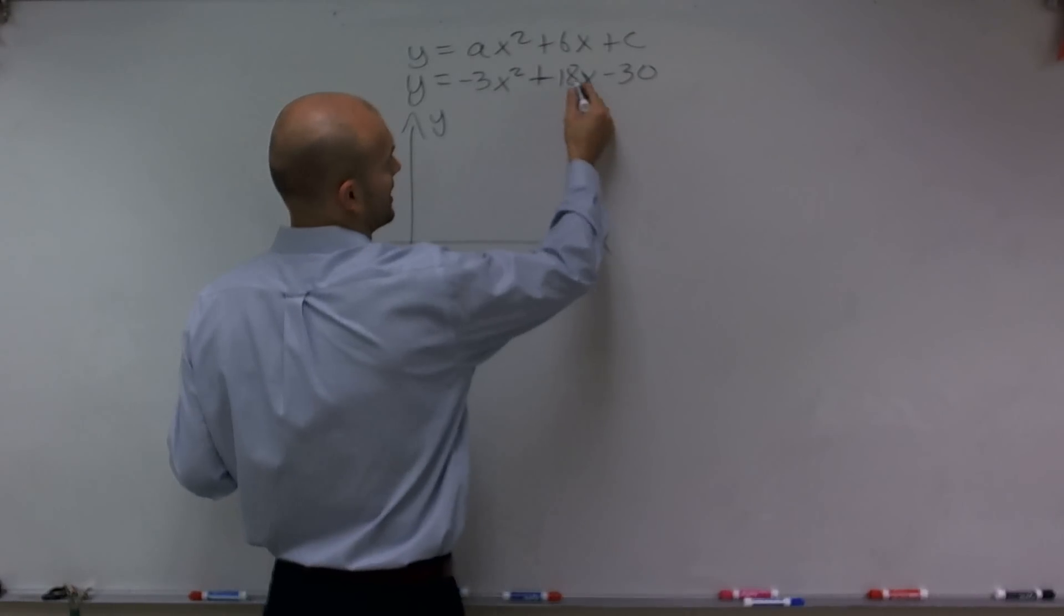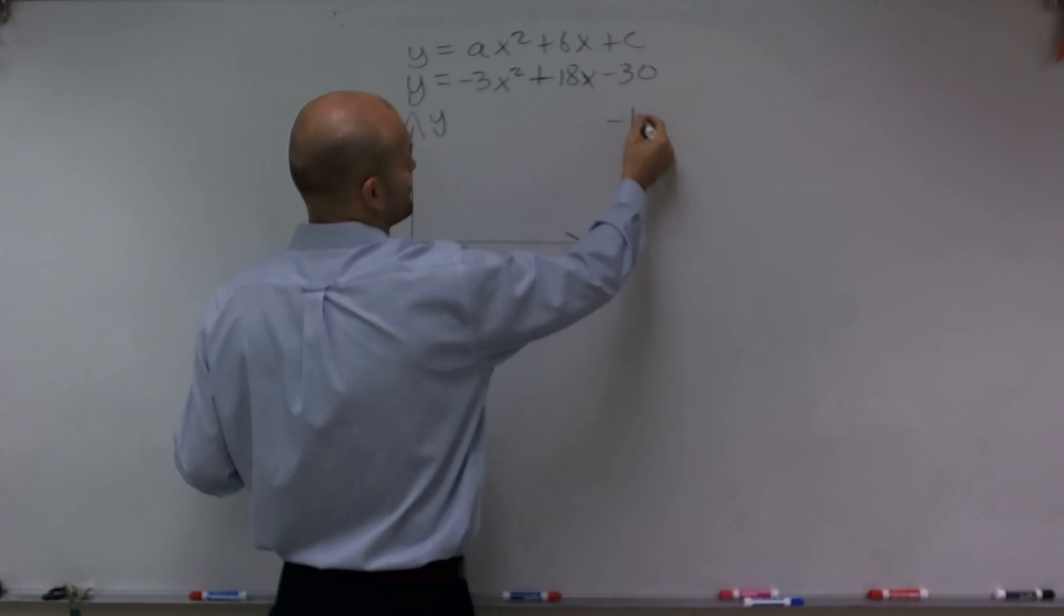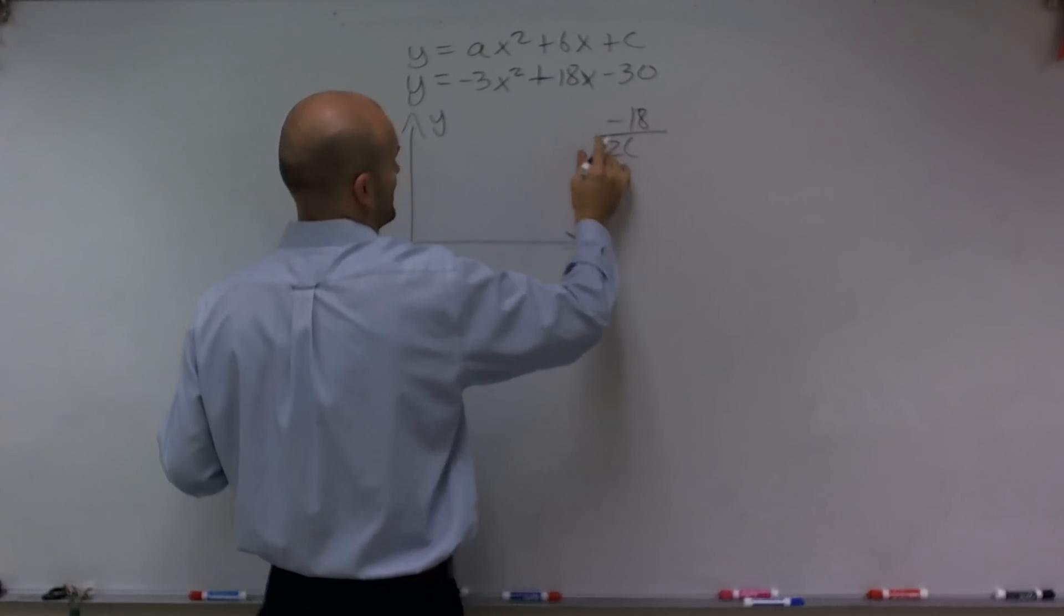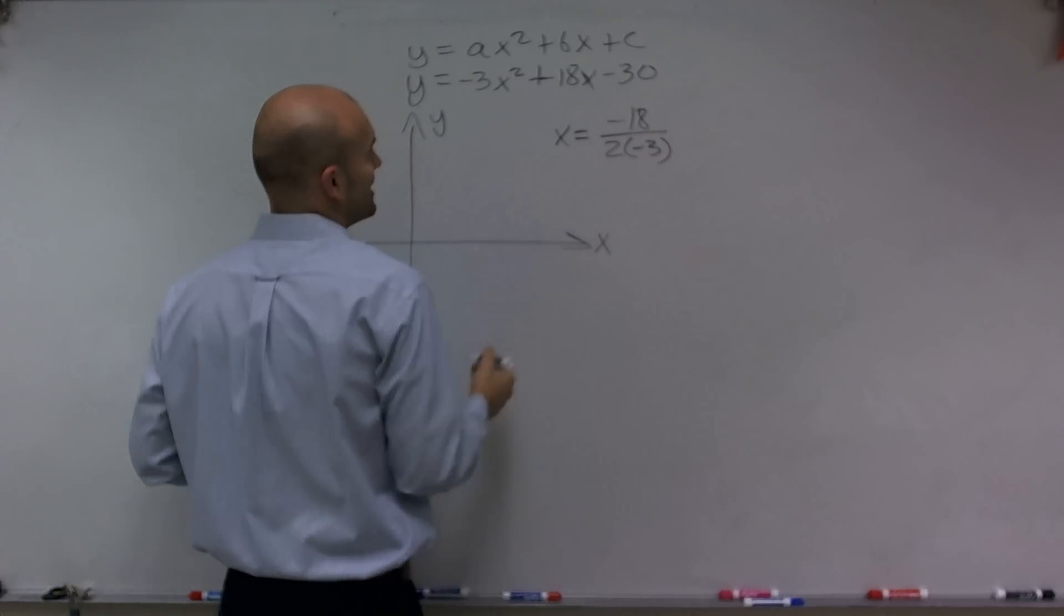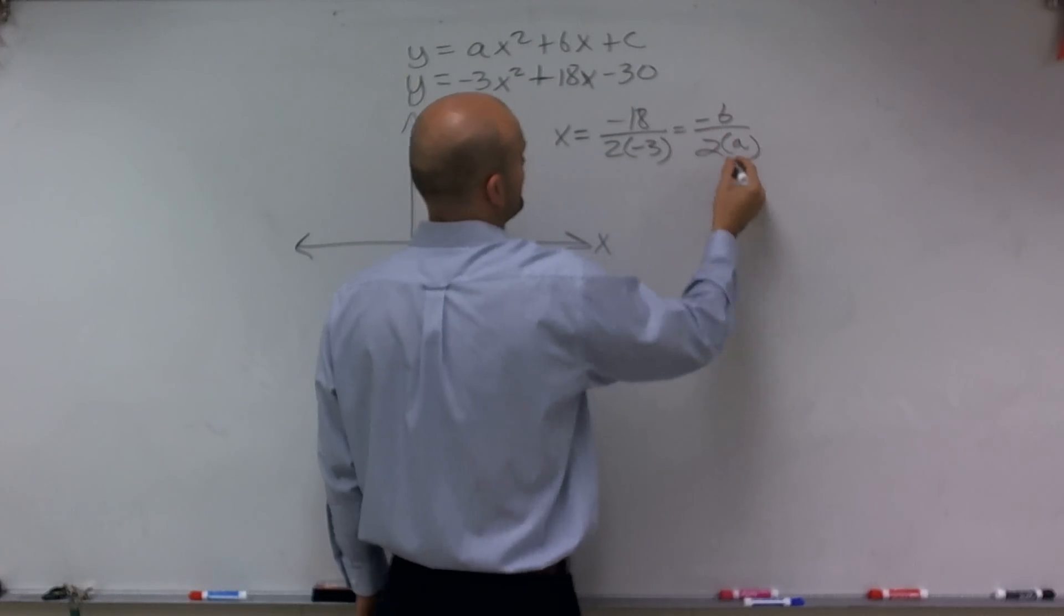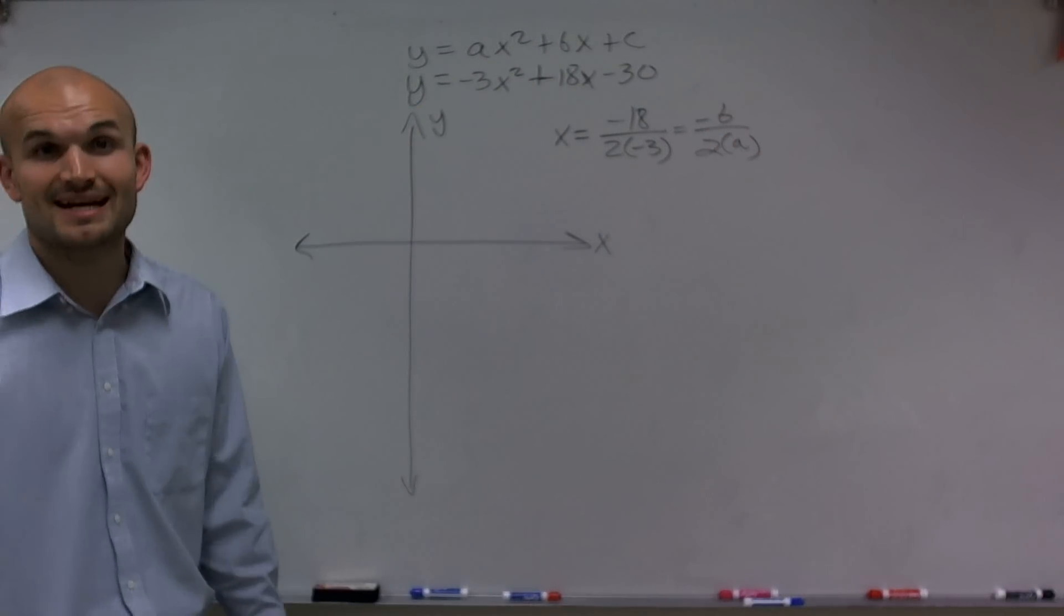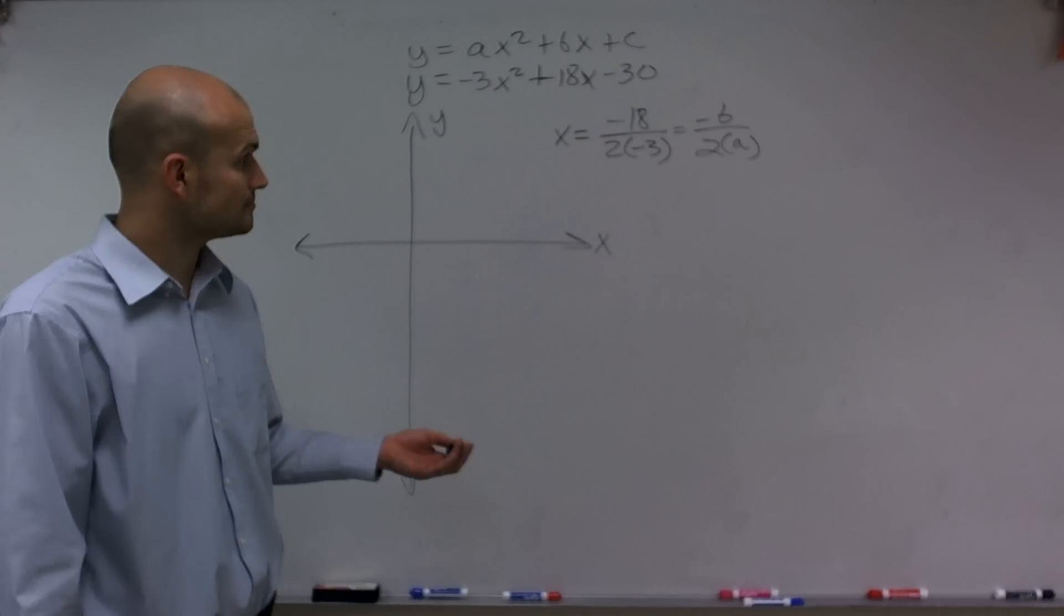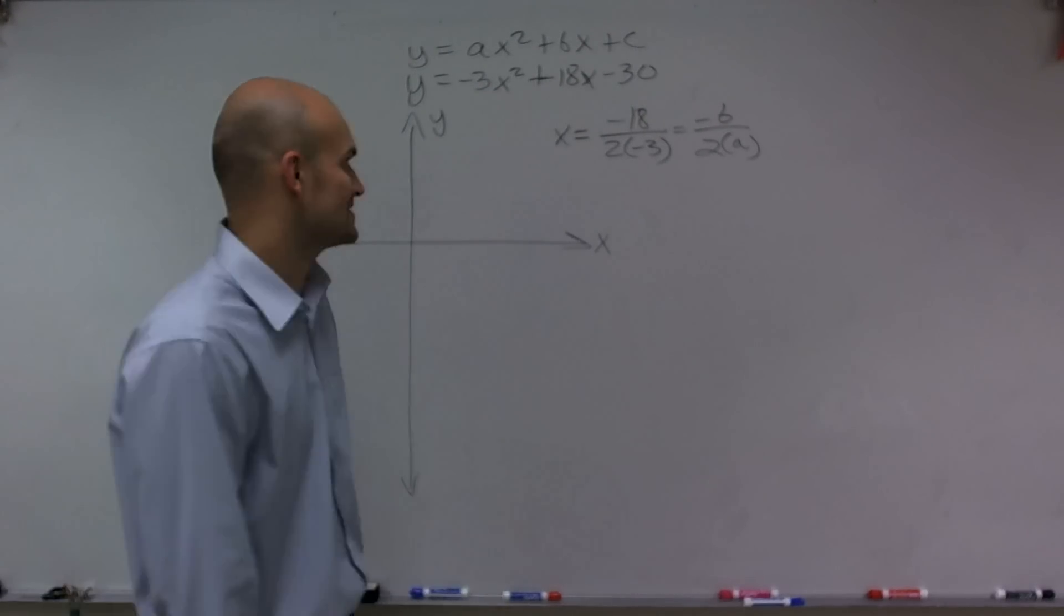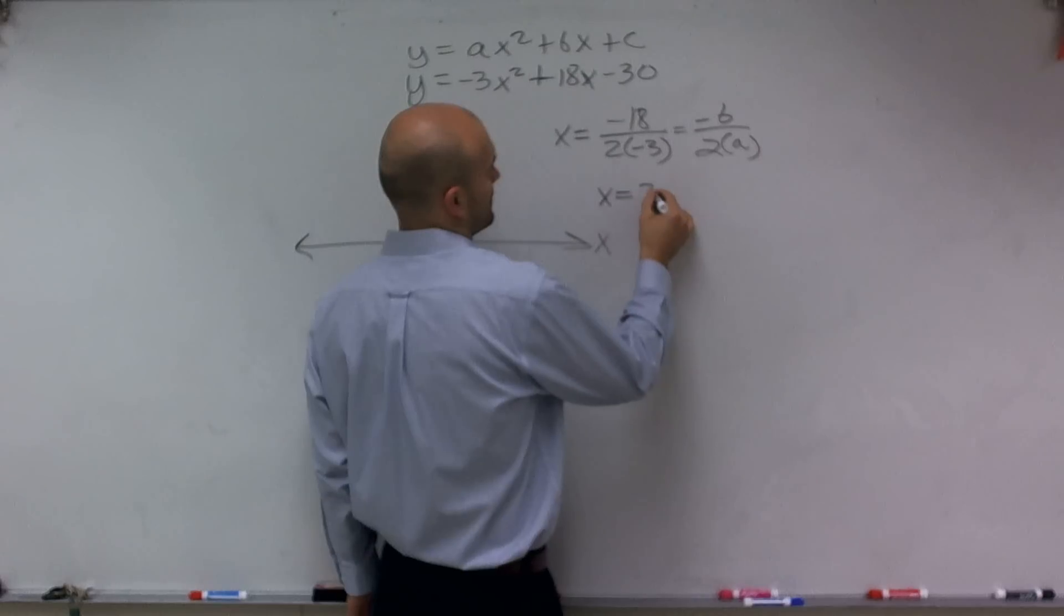So I'm going to take opposite of b, which is negative 18, and divide it by 2 times a. So x equals my line of symmetry, which is opposite of b divided by 2 times a. So I have 2 times negative 3 is negative 6. Negative 18 divided by negative 6 equals x equals 3.